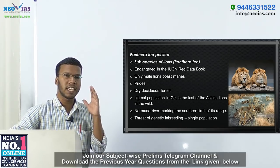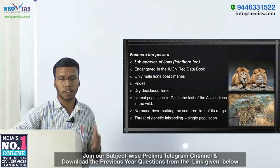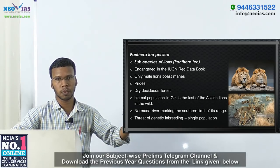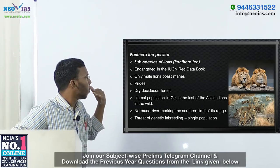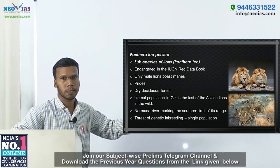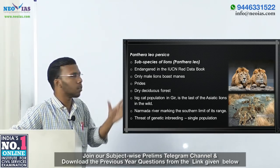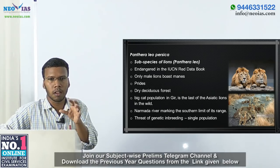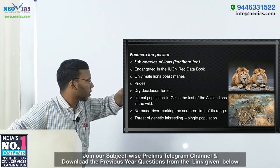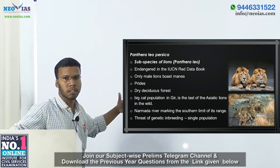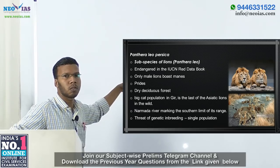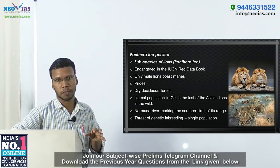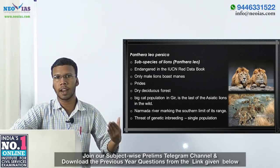Till the 19th century, Asiatic lions roamed large parts of North India, extending up to Bihar. Their spread to South India was limited due to the Narmada river, which originates from the Amarkantak region and flows between the Vindhya and Satpura ranges. The Narmada river thus marked the southern limit of the Asiatic lion's range.